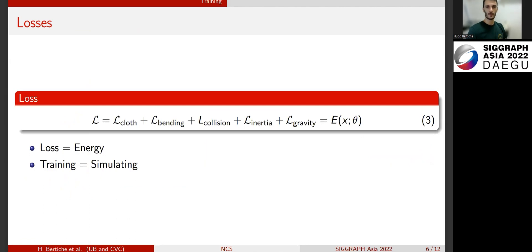For training, we define a loss as the potential energy of the system. Note that in this case, training and simulation become the same thing. This energy we define models the cloth behavior, its bending behavior, a collision penalty, the inertia term which combined with the others will generate cloth dynamics, and finally, the gravity as the potential energy.